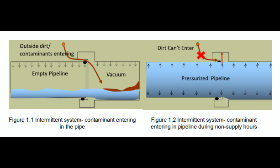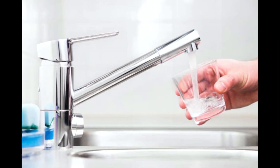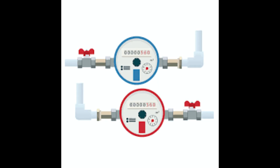On the contrary, in a 24x7 system, due to pressure maintained inside the pipeline, outside impurities cannot enter the pipe and the quality of water remains intact. In most developed countries, there is continuous water supply. They operate their systems by direct pumping with a practice of 100% consumer metering and telescopic tariff.